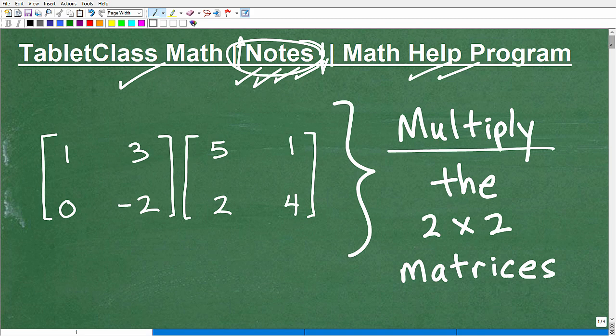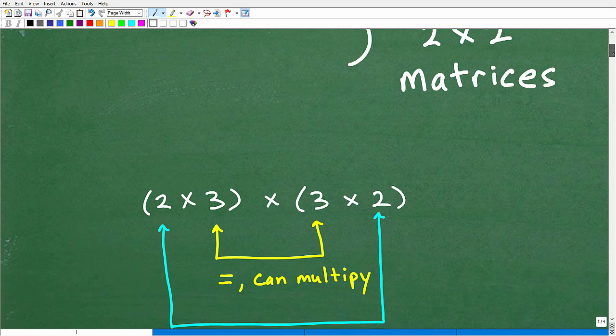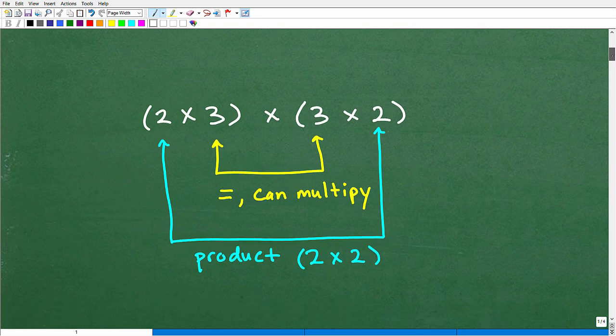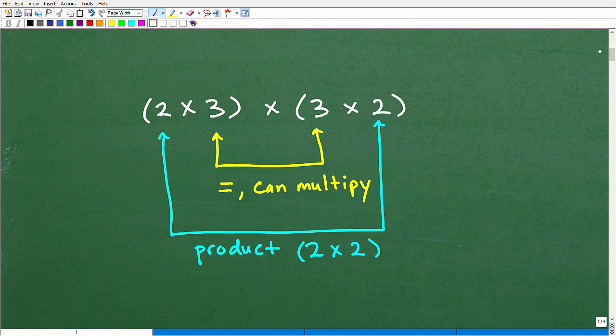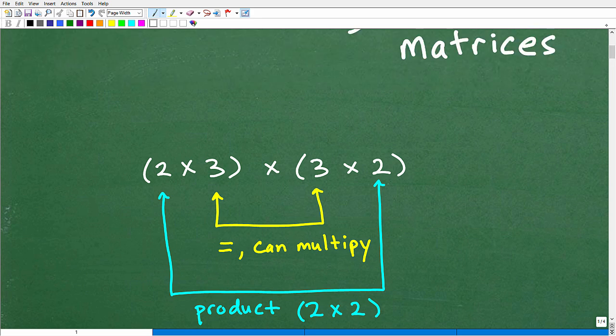But let's get into this. Let's go down and first talk about matrix multiplication. How do we know? Can't we just multiply any old matrices? No, you cannot. We have to check some things. Here's an example.